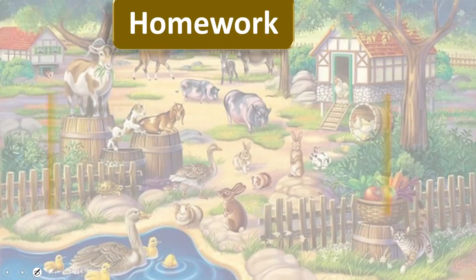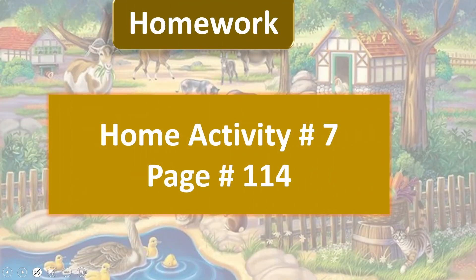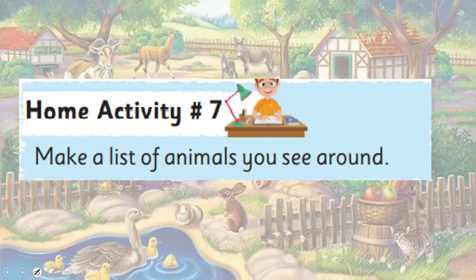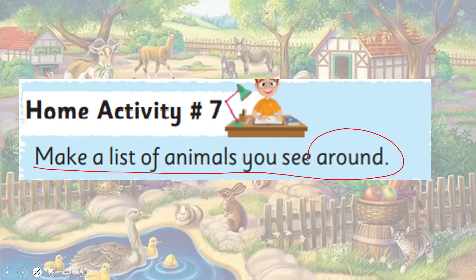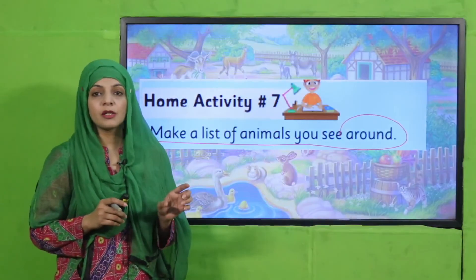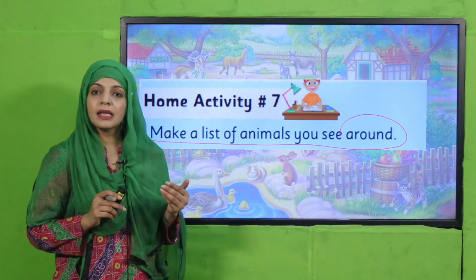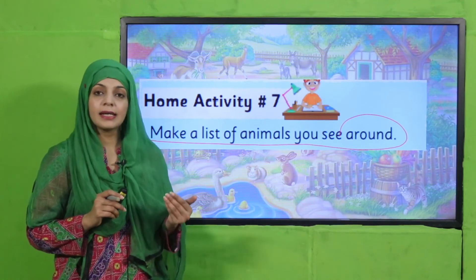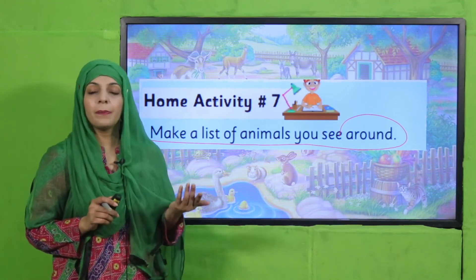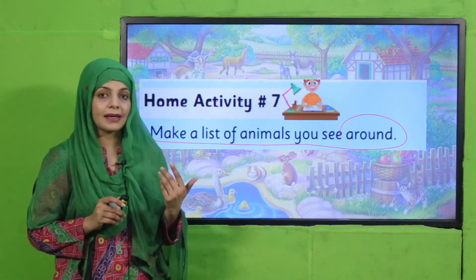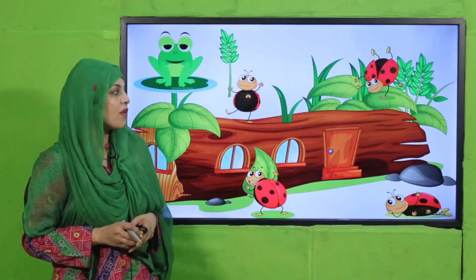My dear students, now is the time for homework. What you will do is complete home activity number 7, given on page number 114. The activity is: make a list of animals you see around.